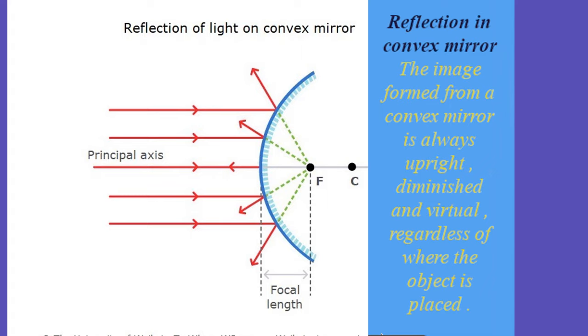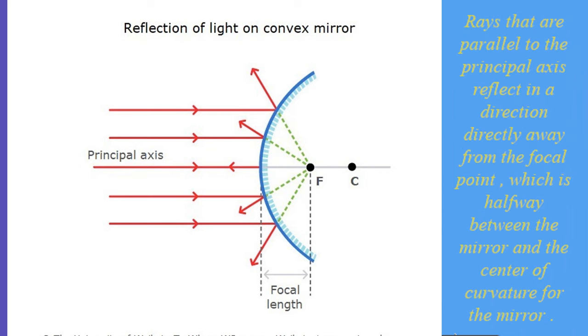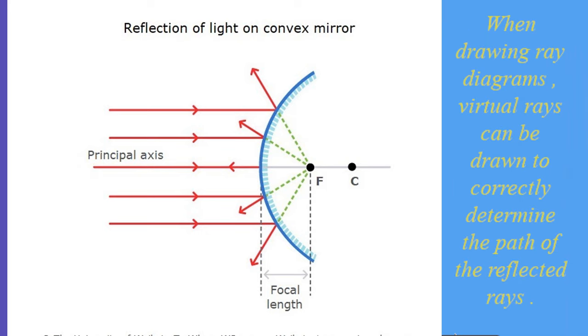Reflection in convex mirror. The image formed from a convex mirror is always upright, diminished and virtual, regardless of where the object is placed. Rays that are parallel to the principal axis reflect in a direction directly away from the focal point, which is halfway between the mirror and the center of curvature for the mirror. When drawing ray diagrams, virtual rays can be drawn to correctly determine the path of the reflected rays.